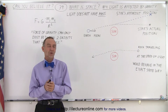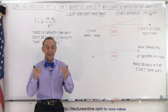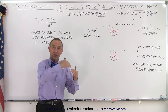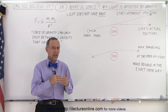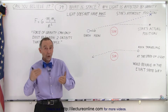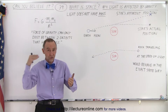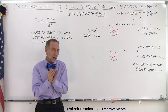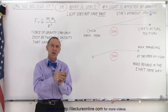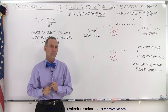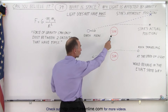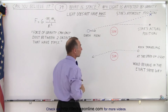One of those things that we observe is that light actually changes direction in space. Now that's very odd because we know that light always travels in a straight path, so why would light bend and change direction? Well, it does so when it passes by a large object.